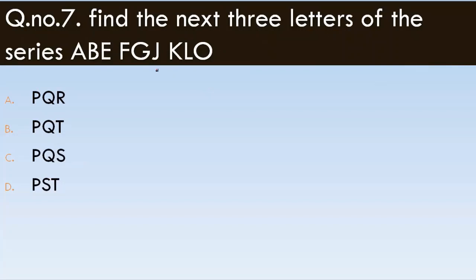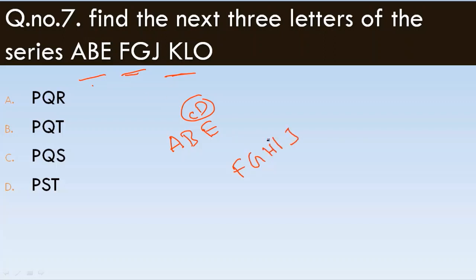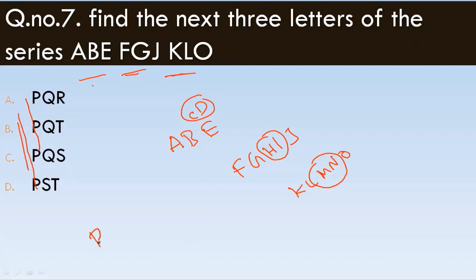Question 7: find the next three letters of the series A, B, E, F, J, K, L, O. The pattern skips two letters each time: AB, skip CD, EF, skip GHI, JK, L, O. Continuing the pattern through the alphabet: next letters after O are P, Q, skipping R, S, then T. The correct answer is P, Q, T.